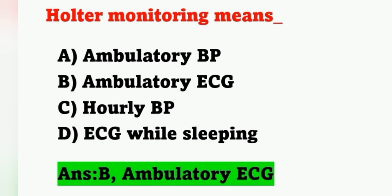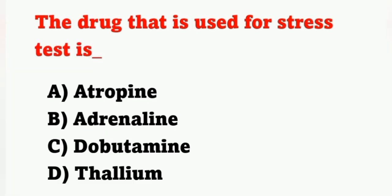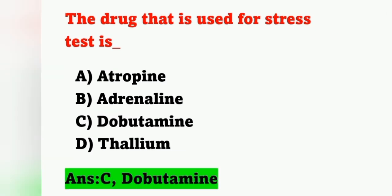Next question: the drug used for a stress test is? Options: A) Atropine, B) Adrenaline, C) Dobutamine, D) Thallium. The drug used for a stress test is dobutamine. Option C is the correct answer.